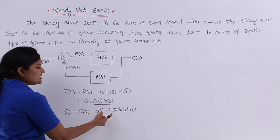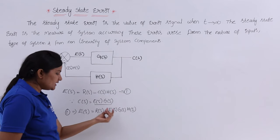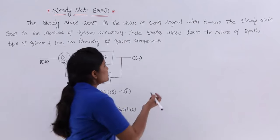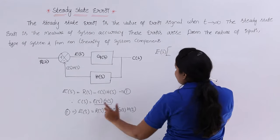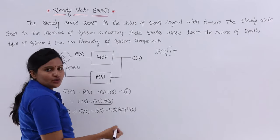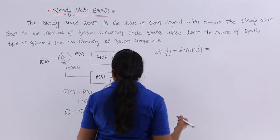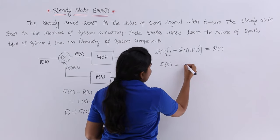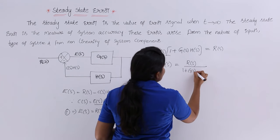Since E(s) appears on both sides, I send the E(s)·G(s)·H(s) term to the left side and take E(s) common. This gives E(s)·[1 + G(s)·H(s)] = R(s). Therefore, the error signal is E(s) = R(s) / [1 + G(s)·H(s)].